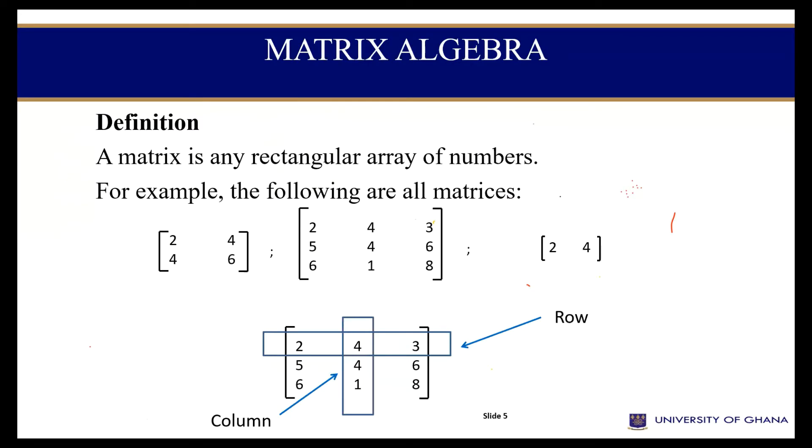Therefore, what is a matrix? A matrix is when I'm able to arrange some numbers in a rectangular array or arrange them in specific arrangements. Then we say that that kind of representation is what we call a matrix. These three arrangements are what we call matrix because the numbers have been arranged in a rectangular array.